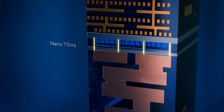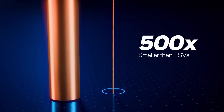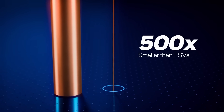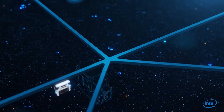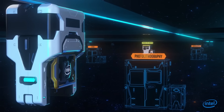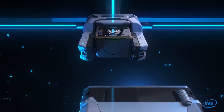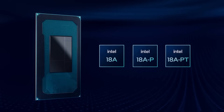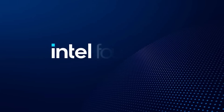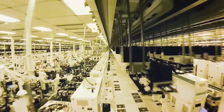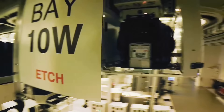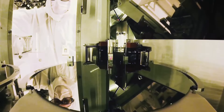Intel has its own semiconductor manufacturing business and has traditionally made its own processors, often being a world leader in process manufacturing. However, it struggled for many years to move beyond 14nm, with many generations of Intel chips stuck at 14nm because Intel couldn't make the leap smaller. AMD also had its own foundries, but in 2008 it announced a plan to go fabless and spin off its semiconductor manufacturing business to a new company, which eventually became GlobalFoundries.